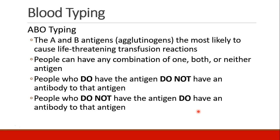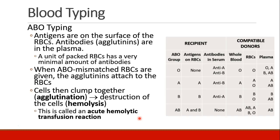People can have A or B or both or neither antigen. The principle you have to remember is that if you have the antigen, you don't have an antibody because it's a self-antigen — you don't make an antibody to your own antigens. And if you don't have the antigen, your body somehow knows how to create an antibody to that antigen. On the surface of the red blood cells we have antigens, and the antibodies, which are the agglutinins, are in the plasma.